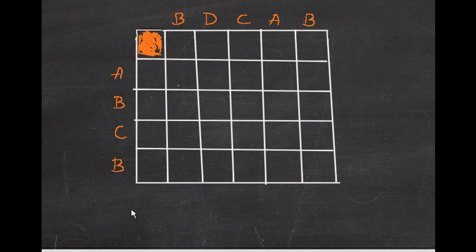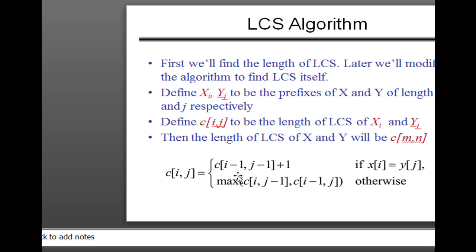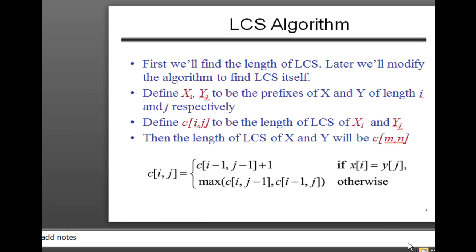This algorithm helps us find the common subsequence and the length of the longest common subsequence. To start off, let's look at the algorithm. When the character at one string matches the character at the other, you increment the number at that cell by one. If they do not match, you just take the maximum from the upper cell or the left cell and write that value in the current cell.